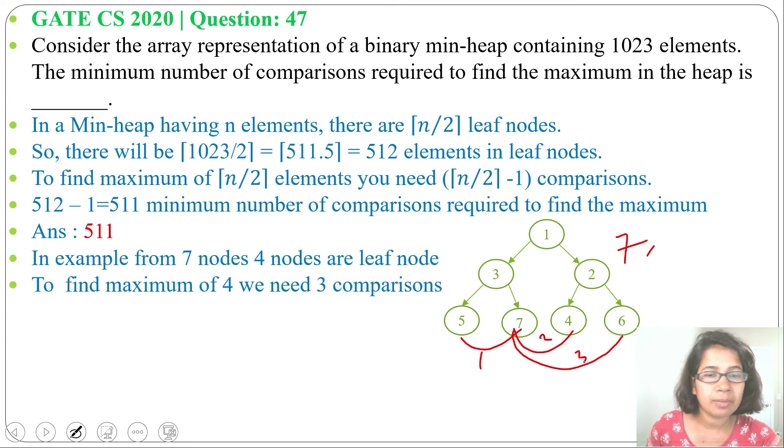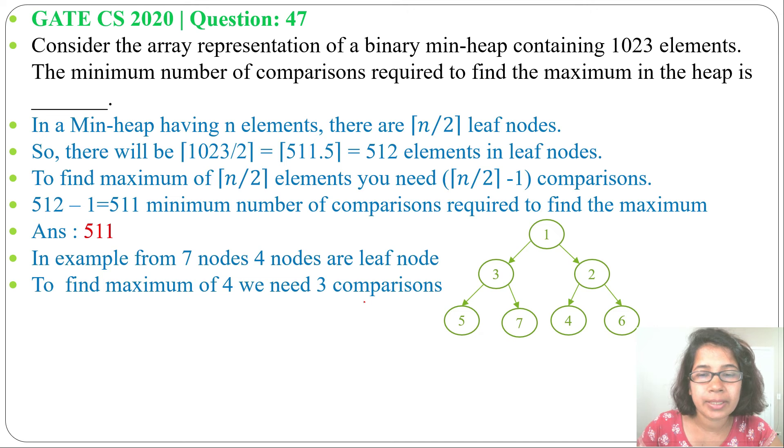So, for 512 elements, there will be 511 comparisons. This is also true for max-heap. In case of max-heap, to find minimum element, we need n divided 2 upper limit minus 1 comparison.